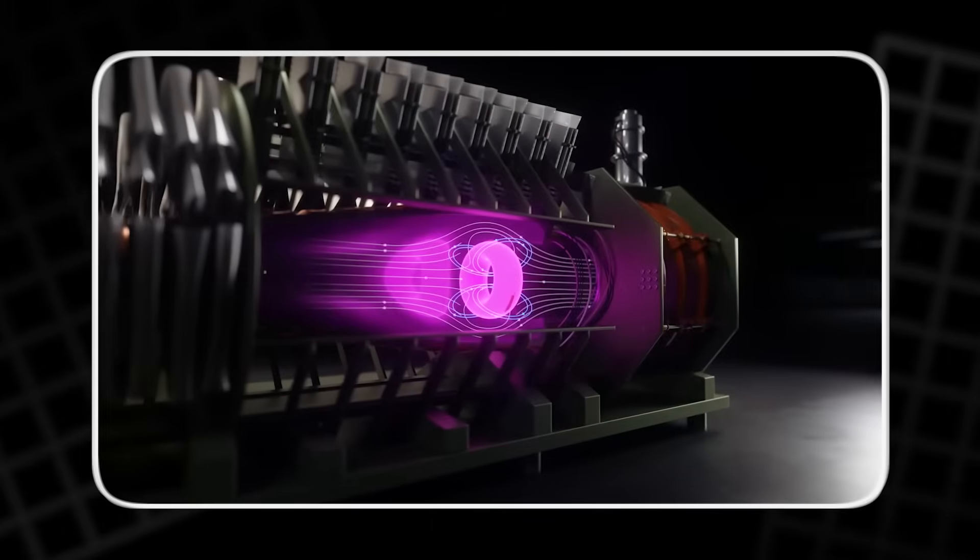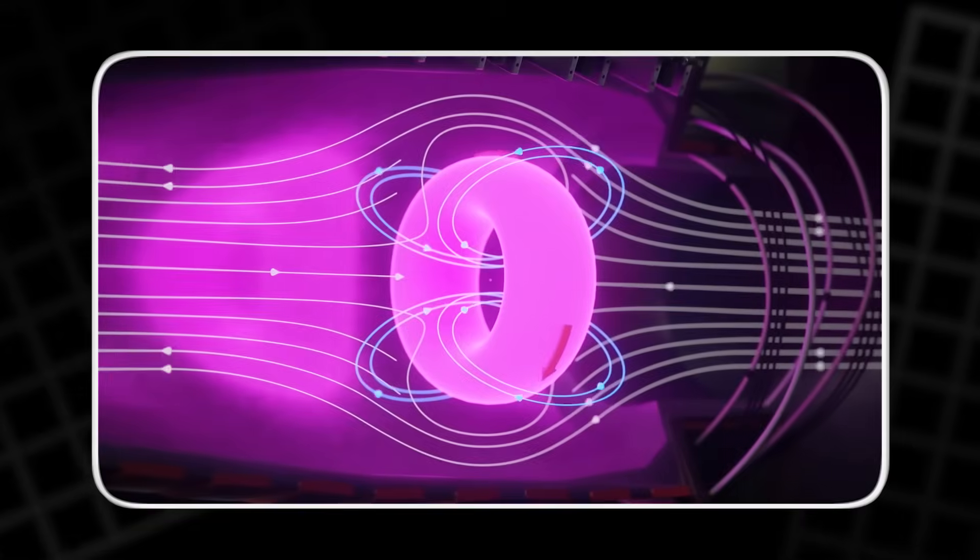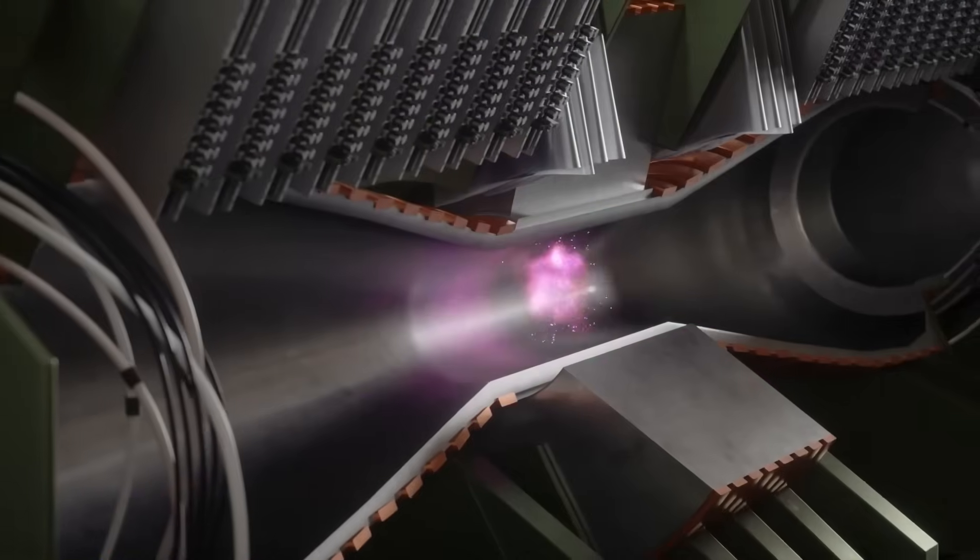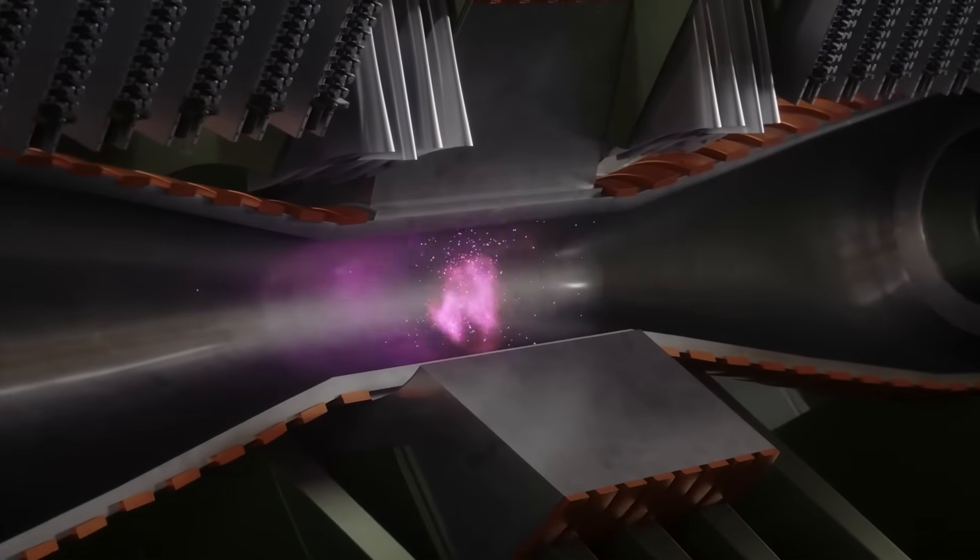The two FRCs race toward each other and meet in the middle, in the compression section. That center zone has the smallest inner bore, but the largest outer build, because it must pack in the strongest magnets and the highest energy density. When the plasmas merge and get squeezed, that is where the fusion happens.